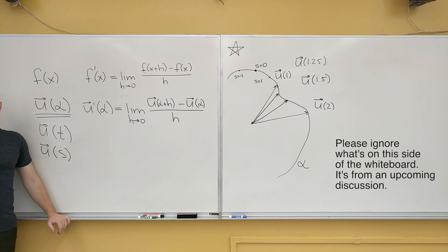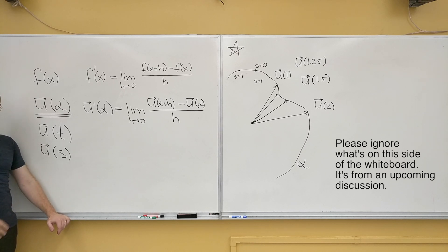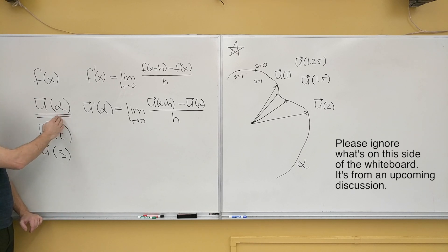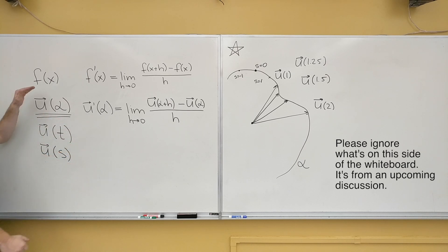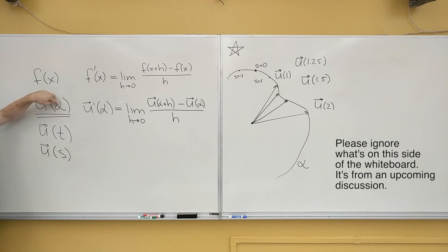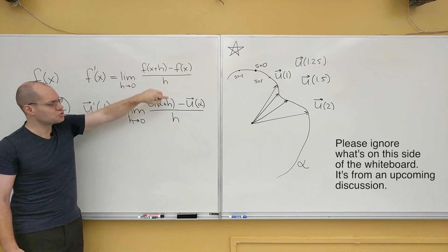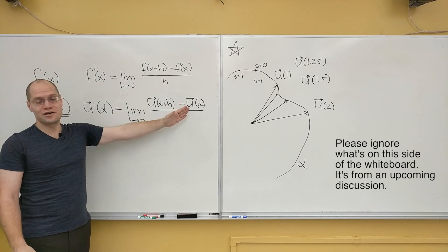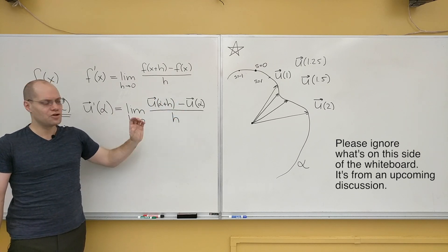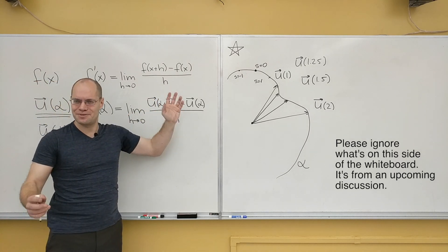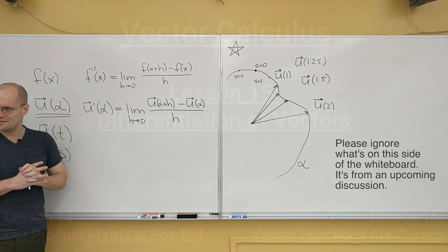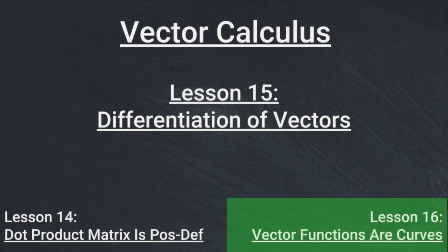The only kind of derivative you can take is with respect to a single parameter. There's no such thing as the derivative with respect to a vector, or with respect to a function. There is only derivative with respect to a simple parameter. Let's live in that simple world where the values of functions can be either numbers or vectors, they all depend on a single parameter, and we take the derivative with respect to that single parameter according to this definition.